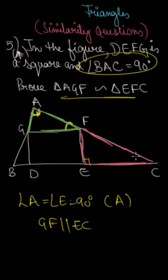This angle equals angle F, and this angle is angle C. These two are equal angles - angle F and angle C are corresponding angles. So angle F in triangle AGF and angle C in EFC are equal corresponding angles.